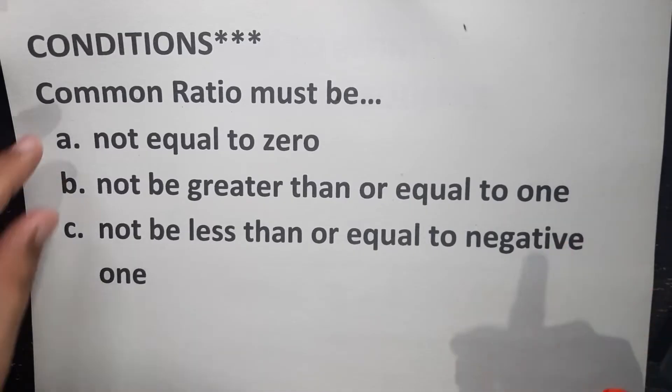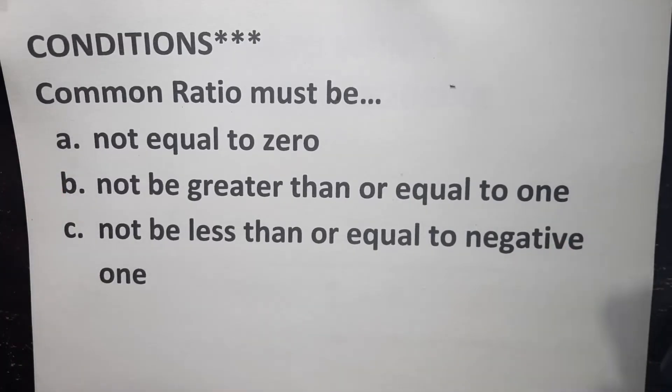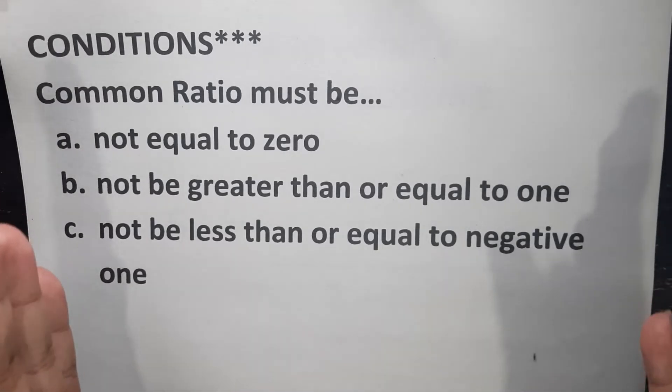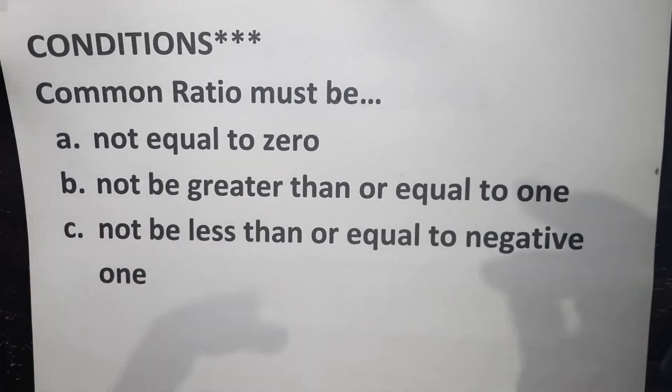So which means, just based on the two given, as of the moment, our common ratio must be between 0 to 1, except 0 and 1. Which means these are the fractional values, 1 fourth, 1 half, 3 fourths, 0.15, and so on.